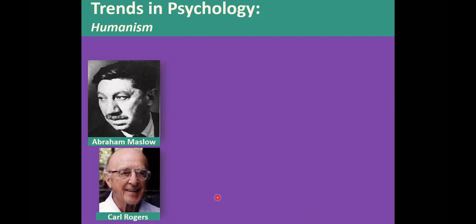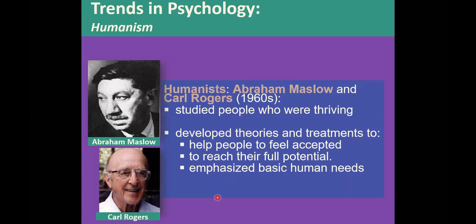Around the late 1950s and 1960s, the humanist idea began to take hold in psychology. People like Abraham Maslow and Carl Rogers looked at what psychology had been doing — studying only behaviors and primarily looking at people who were having problems — and said let's study people who are thriving and see what enables people to develop their full potential. They developed theories and treatments to help people feel more accepted, reach their full potential, and emphasized basic human needs.